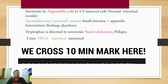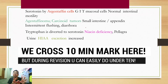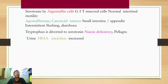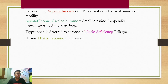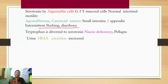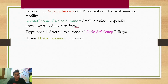Serotonin is secreted from argentaffin cells in the GIT. A tumor known as argentaffinoma or carcinoid tumor leads to excess serotonin production, causing intermittent flushing and diarrhea. In this scenario, tryptophan is diverted towards the serotonin pathway so NAD is not formed, leading to pellagra in case of these tumors. In excess serotonin production, urinary 5-hydroxyindoleacetic acid (5-HIAA) is increased — it is a marker of carcinoid tumor and argentaffinoma.